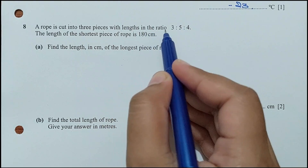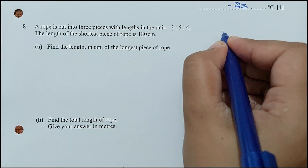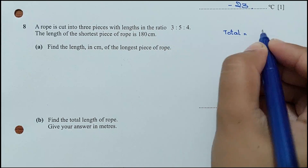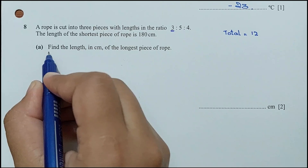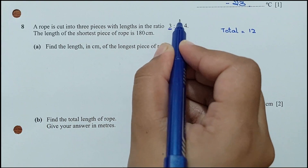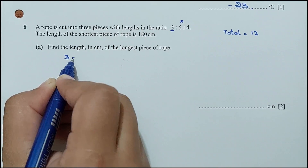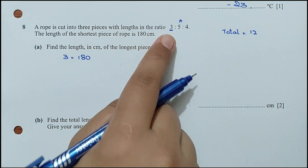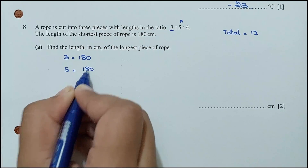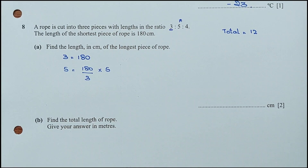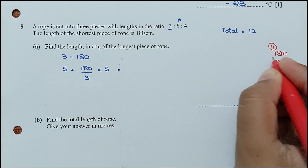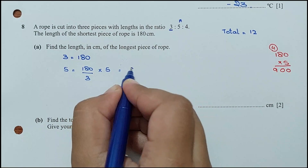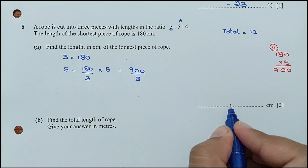Question 8: a rope is cut into 3 pieces in the ratio 3 : 5 : 4. The total number of parts is 3 + 5 + 4 = 12. The shortest piece is 3 parts and equals 180 cm. Part A: the longest piece is 5 parts. So the longest = 180 ÷ 3 × 5 = 300 cm.